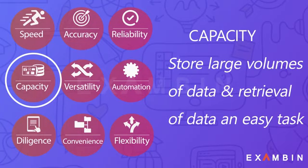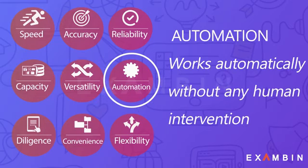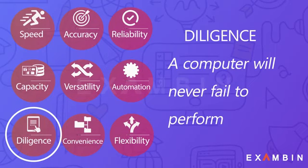Number four — Memory and Storage Capacity: the computer can store large volumes of data and makes the retrieval of data an easy task. Number five — Versatility: the computer can accomplish many different things; it can accept information through various input/output devices, perform arithmetic and logic operations, and generate a variety of outputs. Number six — Automation: once the instructions are fed into the computer it works automatically without any human intervention.